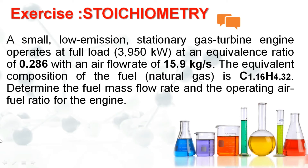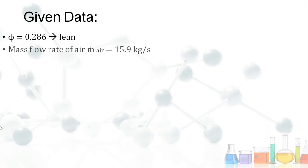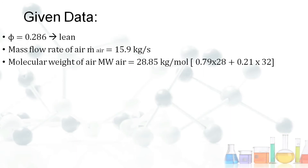The given data are: equivalence ratio φ = 0.286, which is less than 1, so this is a lean mixture. The mass flow rate of air (ṁ_air) is 15.9 kg/s.